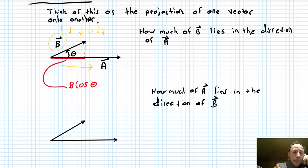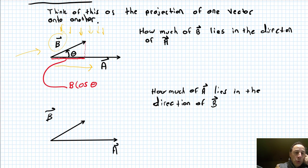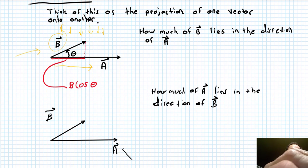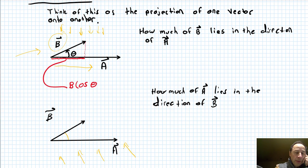Up here the light was shining perpendicular to A. Now we're going to shine the light perpendicular to B, so it's going to hit A first but project toward B. We still have the same angle theta.